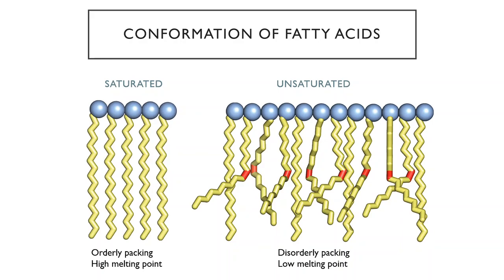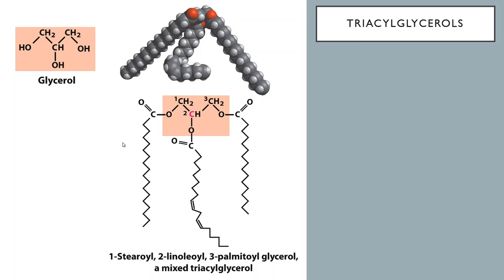When saturated versus unsaturated fatty acids are packed together they have different properties. Saturated fatty acids, because they're all the same shape, tend to pack together into nice rows. A bunch of unsaturated fatty acids together, because they're all basically bent, tend to pack in a less orderly way. This affects properties like melting point — saturated fatty acids have a higher melting point than unsaturated fatty acids. We'll come back to why that matters.